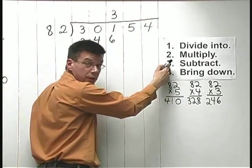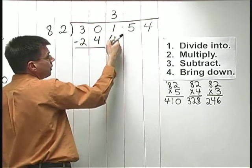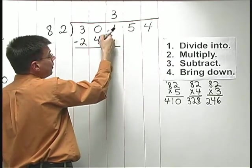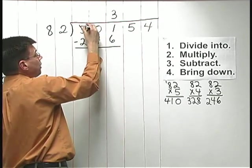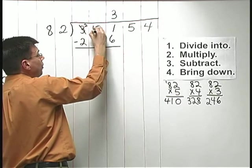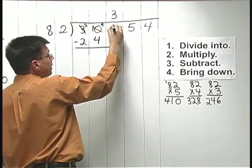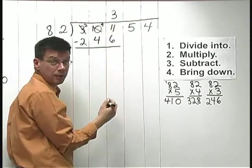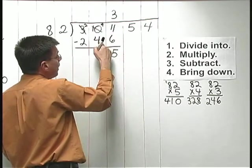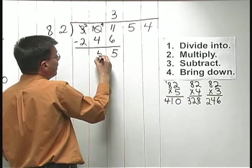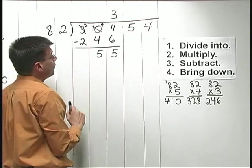After the multiply step comes the subtract step. We need to subtract. 1 minus 6, I can't do. So, I need to borrow. Can't get anything from the 0. So, I borrow from the 3. 3 becomes 2. The place to the right becomes a 10. Then I borrow from the 10. The 10 becomes a 9. The place to the right, I add 10 on. So, that becomes 11. 11 minus 6 is 5. 9 minus 4 is 5. And 2 minus 2 is 0 out front. So, I get 55 after I subtract.